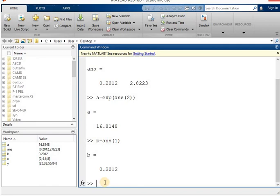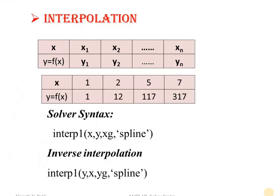Now let's move to the next topic: interpolation. In interpolation we are given x and y values and have to find the value of y at a given value of x, where x is between x1 and xn. The solver syntax is interp1(x, y, xg, 'spline'), where x and y are the given data points, xg is the value of x at which we find y, and spline is the method of interpolation.